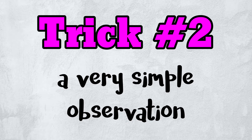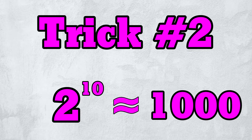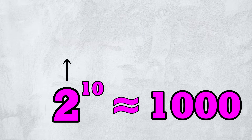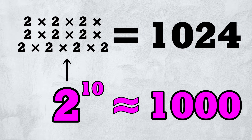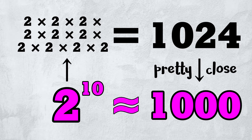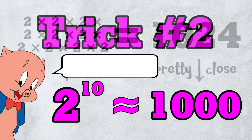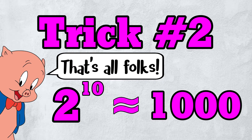Trick 2 is a very simple observation: 2 to the power of 10 is roughly 1000. That's because 2 multiplied by itself 10 times equals 1024, which is pretty close to 1000. That's all there is to trick 2.